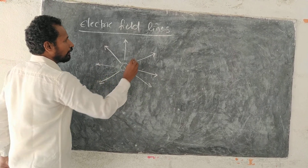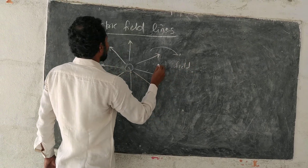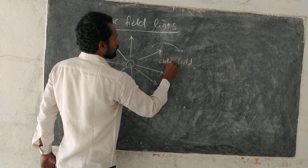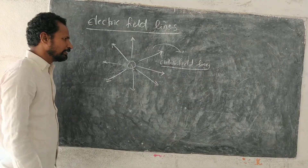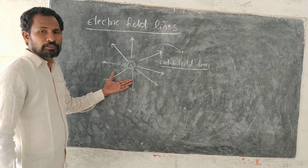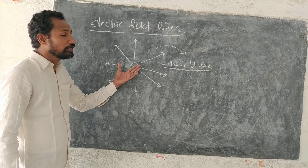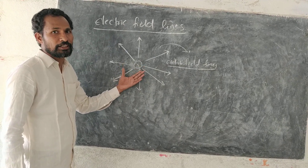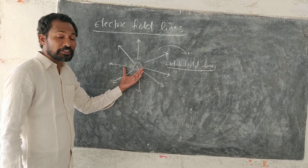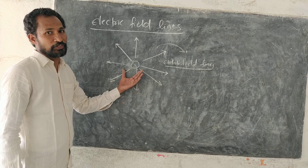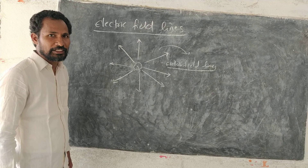These lines we call electric field lines, or electric field lines. These are the lines which show how the electric field is distributed around the charge. For pictorial representation, we use these lines, and we call them electric field lines.